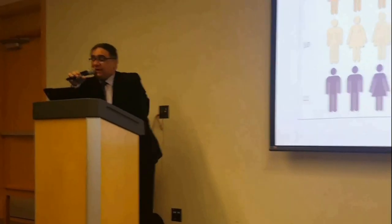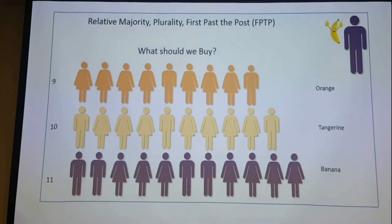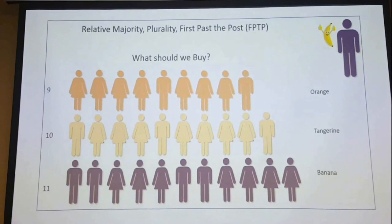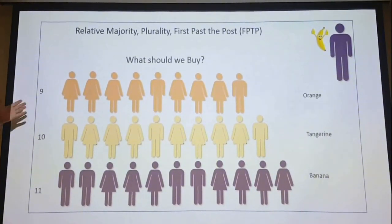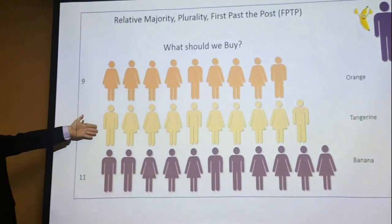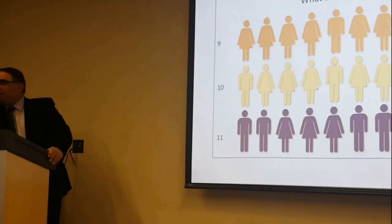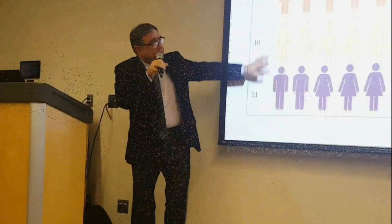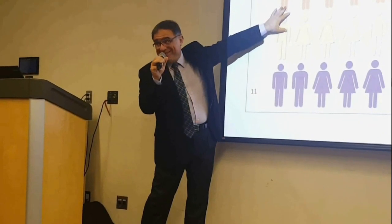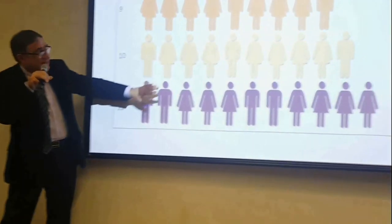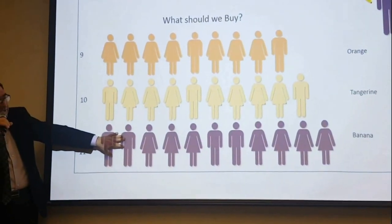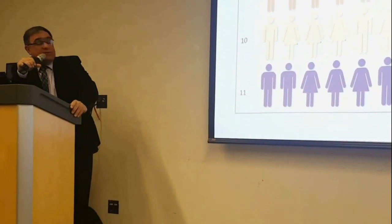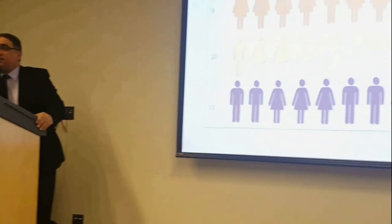First-past-the-post works very well if you have two alternatives. If you don't have two alternatives, it will cause a problem. Look at this example: we have three alternatives. It's a party and we have to choose one thing to buy. Some people like orange, some like tangerine, and some like banana. Which one will be elected under first-past-the-post? Banana.